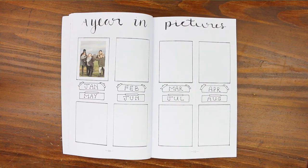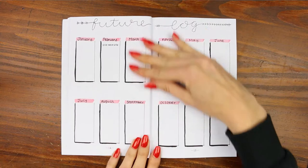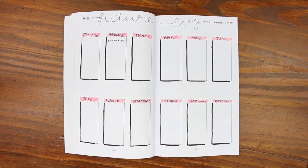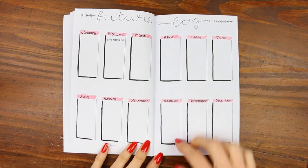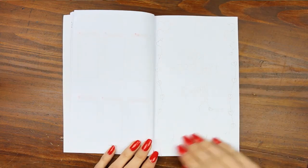And then I thought it'd be cute to look back on a year in pictures so every month I'm going to just put in a little picture. And then for my future log I just kept it really simple and I'll be able to write down things that are coming up.